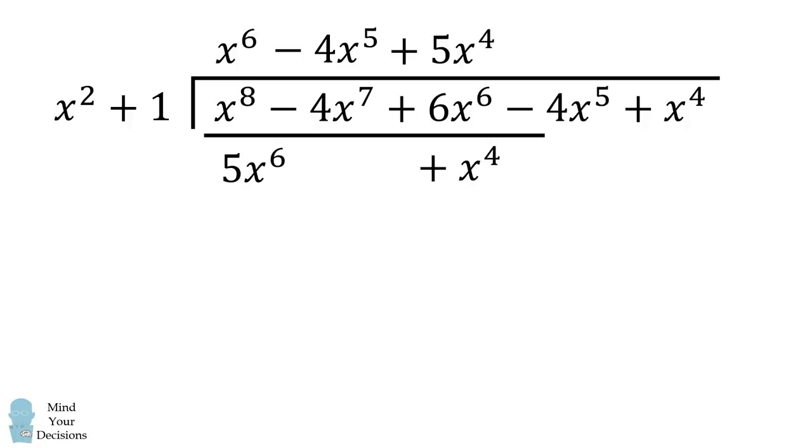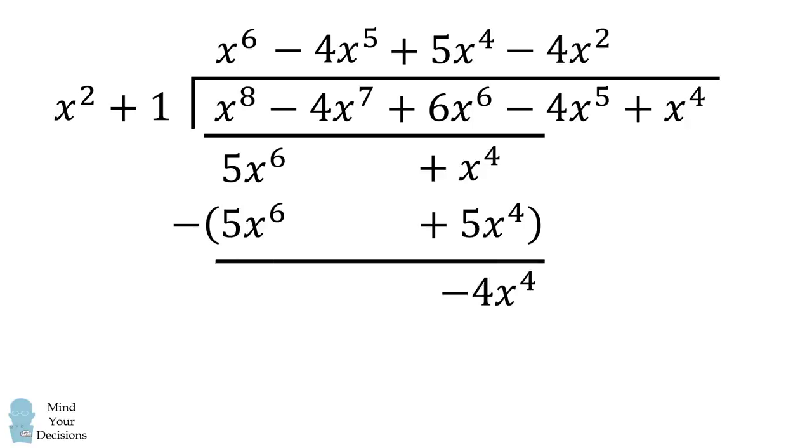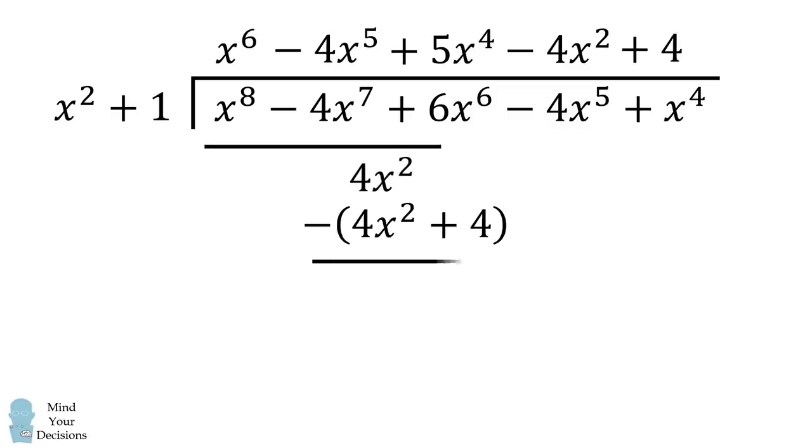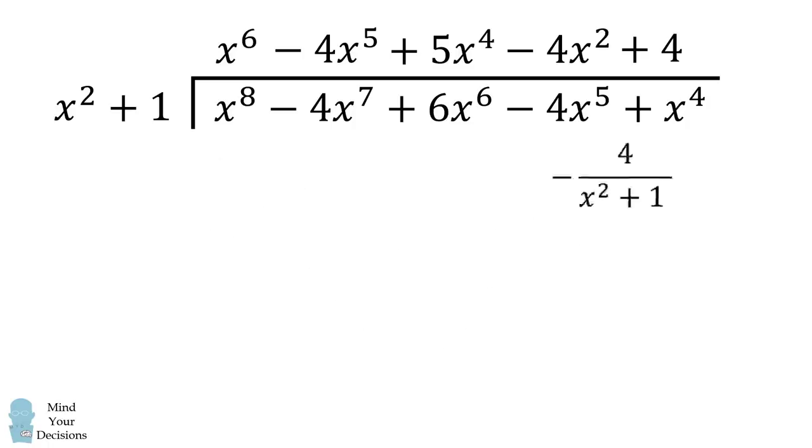We then want to eliminate the leading term. So we multiply through, and we get this result. We'll subtract out. We then get the next term, which is negative 4x squared. We again do this calculation, and we want to continue one more time. We then have plus 4, so we eliminate this leading term, and we're left with a remainder of negative 4. So this negative 4 will be divided by x squared plus 1. So this is the result of polynomial long division.